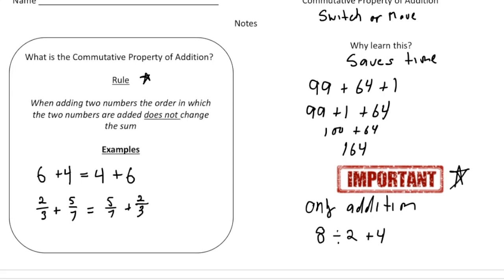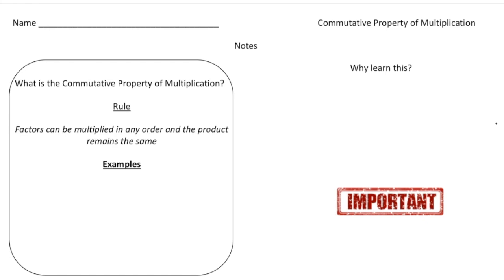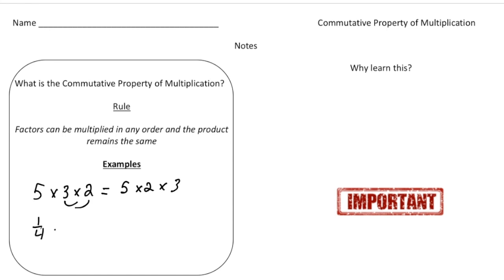Now let's talk about the commutative property of multiplication. This is very similar to the commutative property of addition. The rule states that the factors can be multiplied in any order and the product remains the same. An example would be 5 times 3 times 2 equals 5 times 2 times 3 — I moved around the 3 and the 2. Another example: 1 fourth times 9 fifths times 3 fourths. Because all we're doing is multiplying, I can move the numbers around.